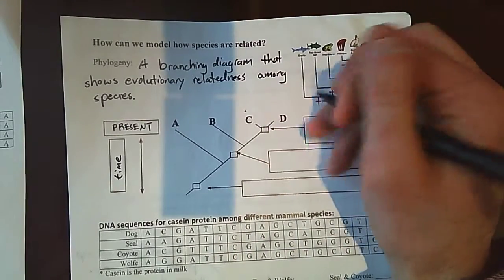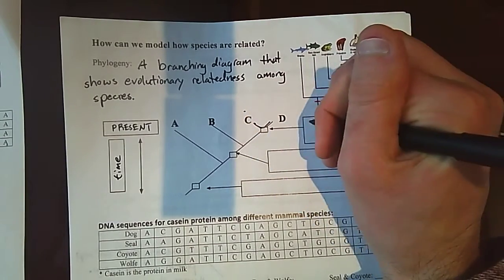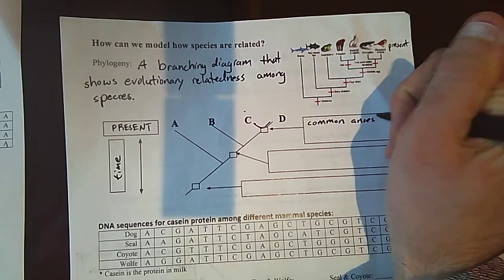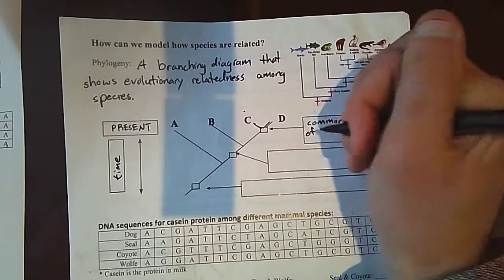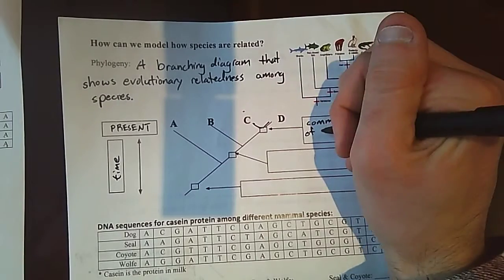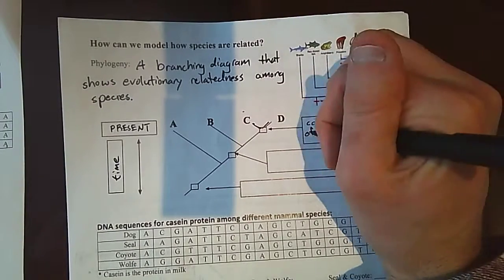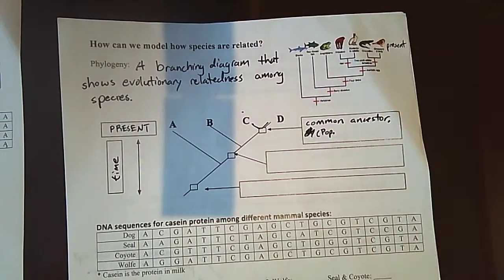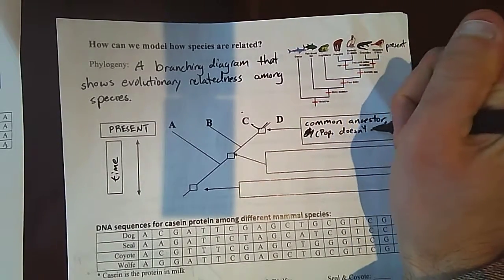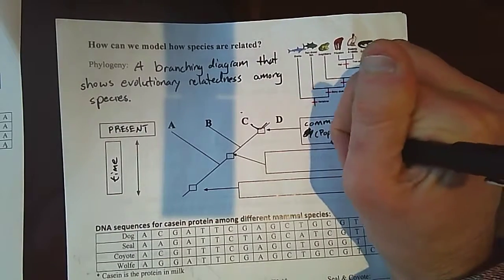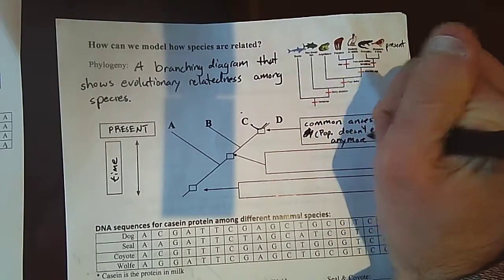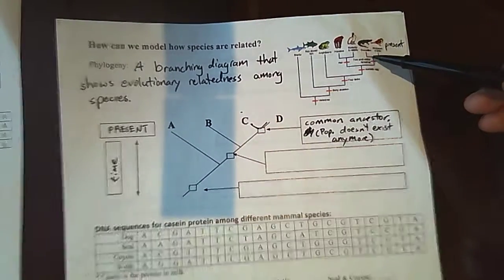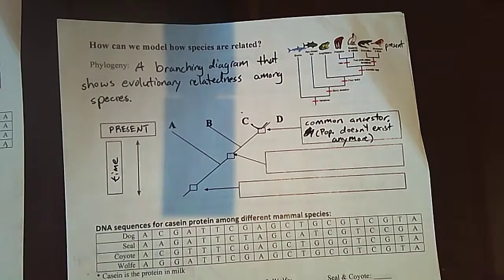Maybe this is like crocodiles and birds right here, C and D. So what this shows right here, where these two lines meet, this is the common ancestor. We would say that this population of common ancestors doesn't exist anymore. The reason why it doesn't exist anymore is because it became species C and D. It became, this common ancestor became crocodiles and birds, so it's just no longer there.